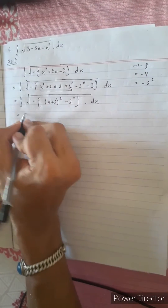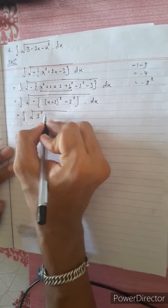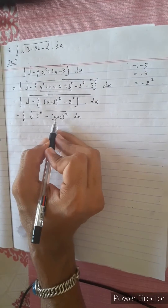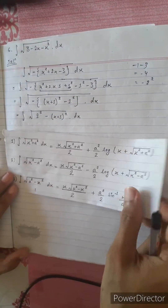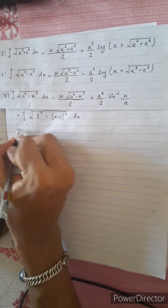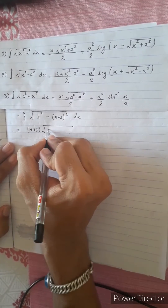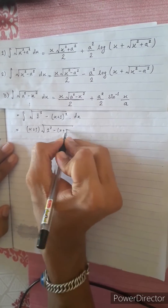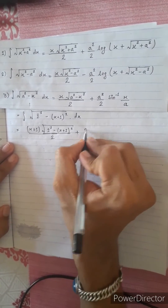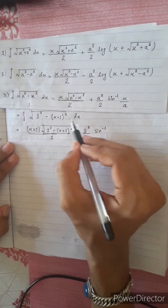Minus two squared dot dx — using the a squared minus x squared formula. x plus 1 squared.